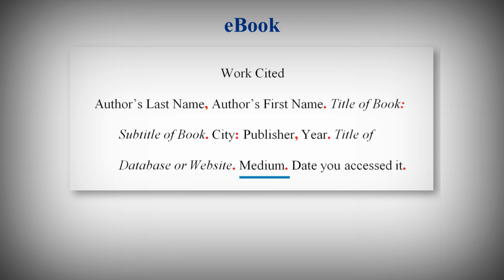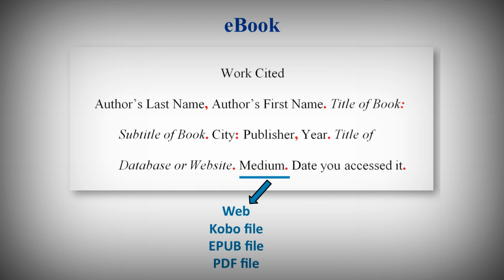Then indicate the medium of publication. Medium refers to the format. For most students accessing e-books through the library, the medium will be Web. Web is how MLA refers to any online source or website. Other e-book mediums might include Kobo file, EPUB file, or PDF file.